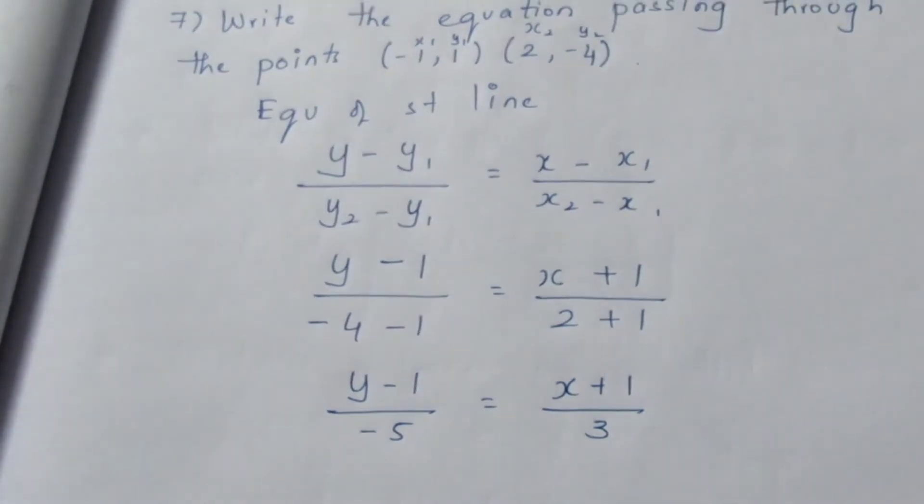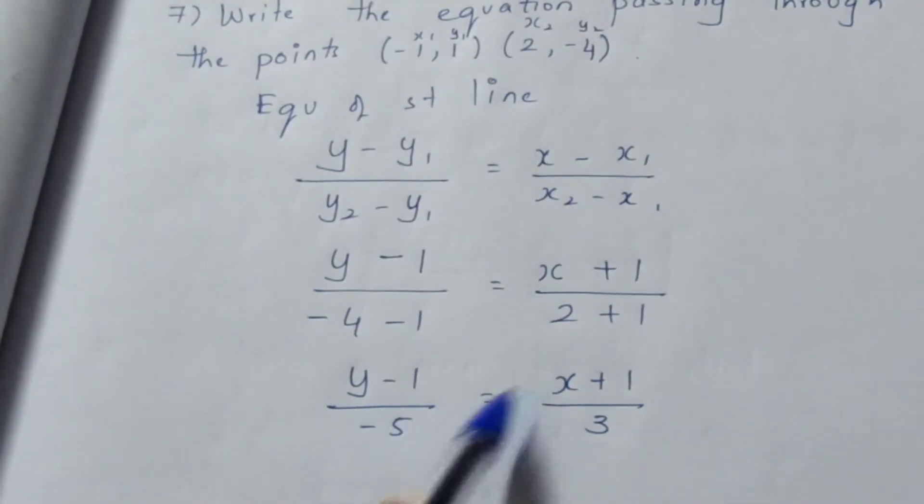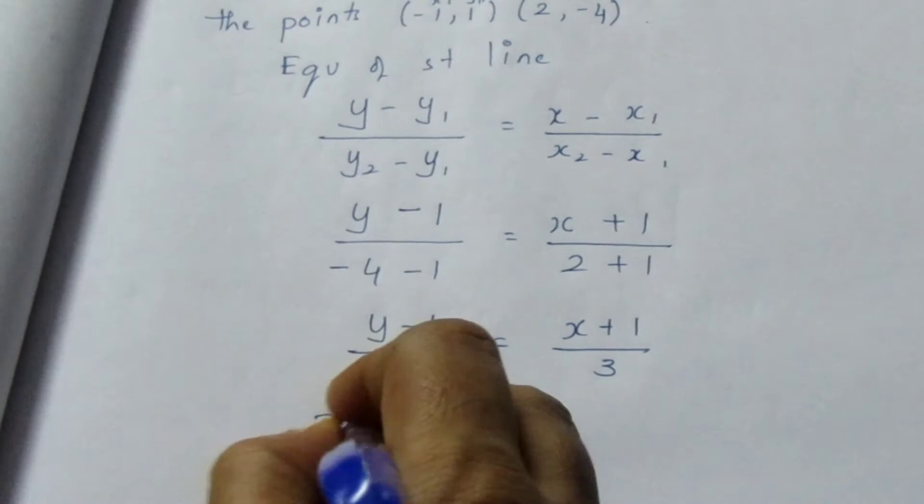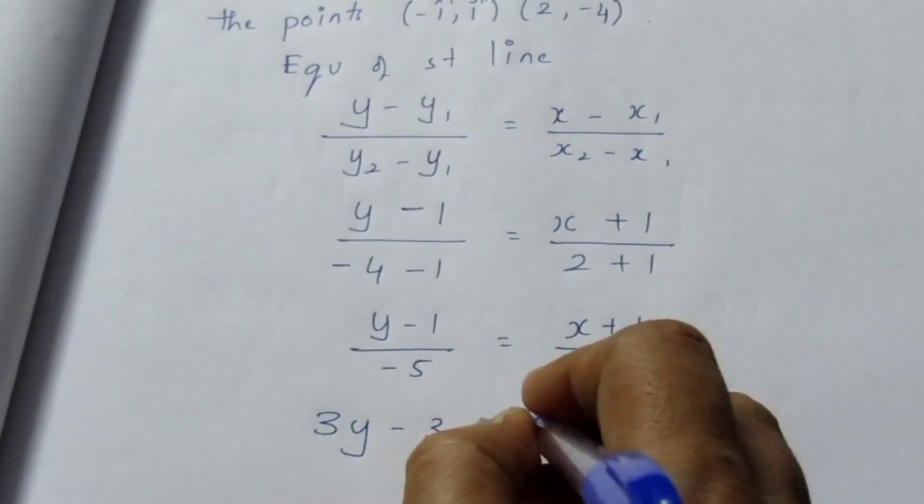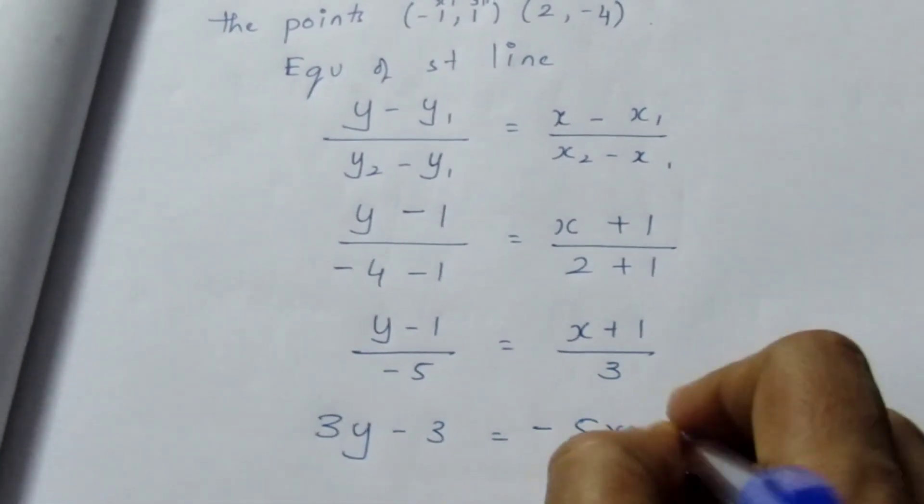Now cross multiply. You get 3y - 3 = -5x - 5.